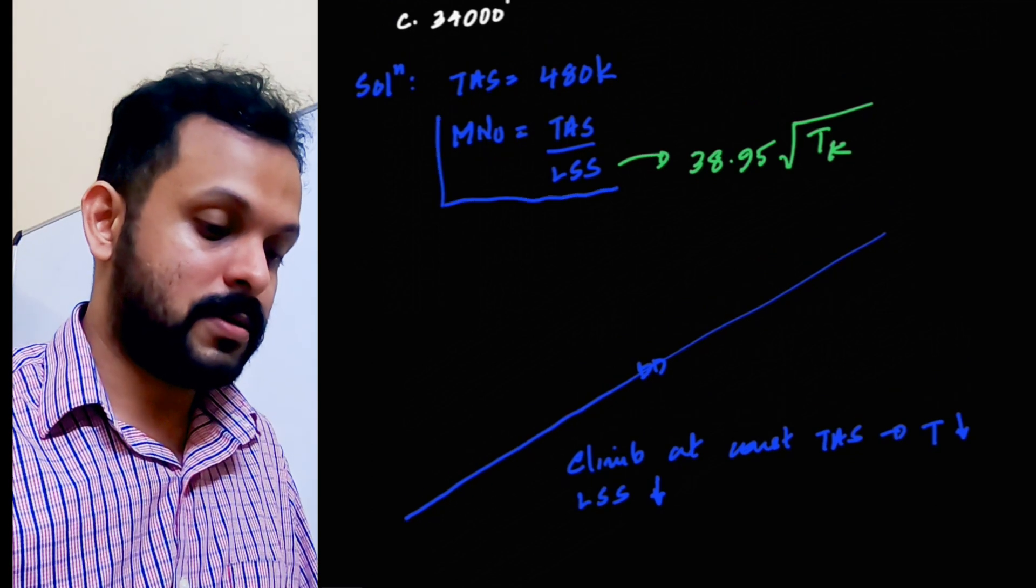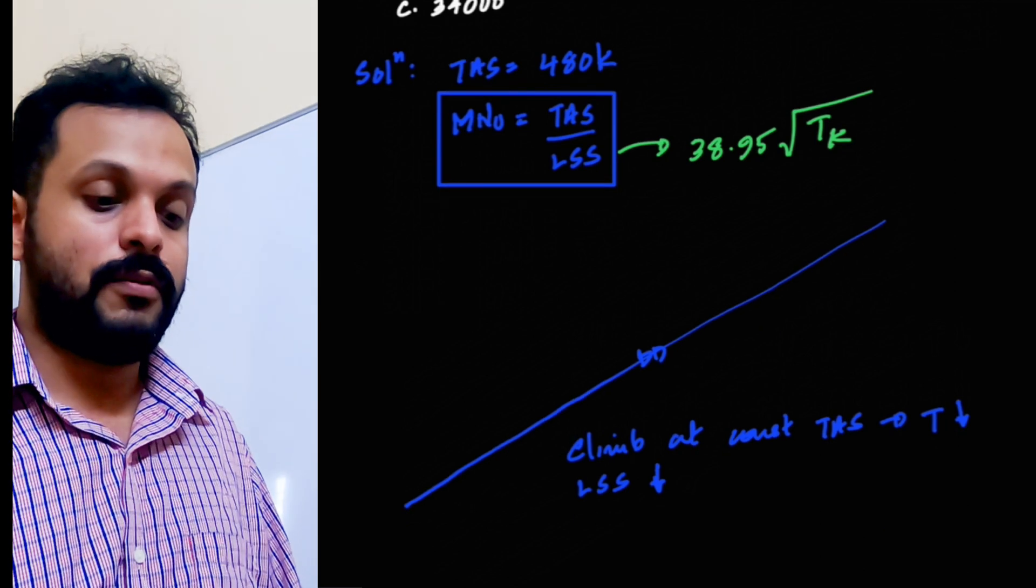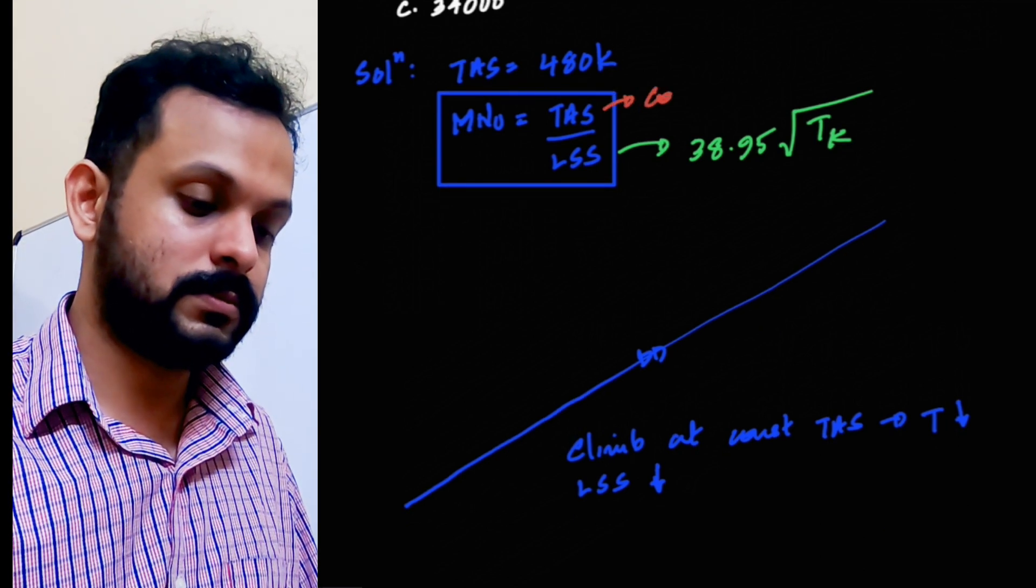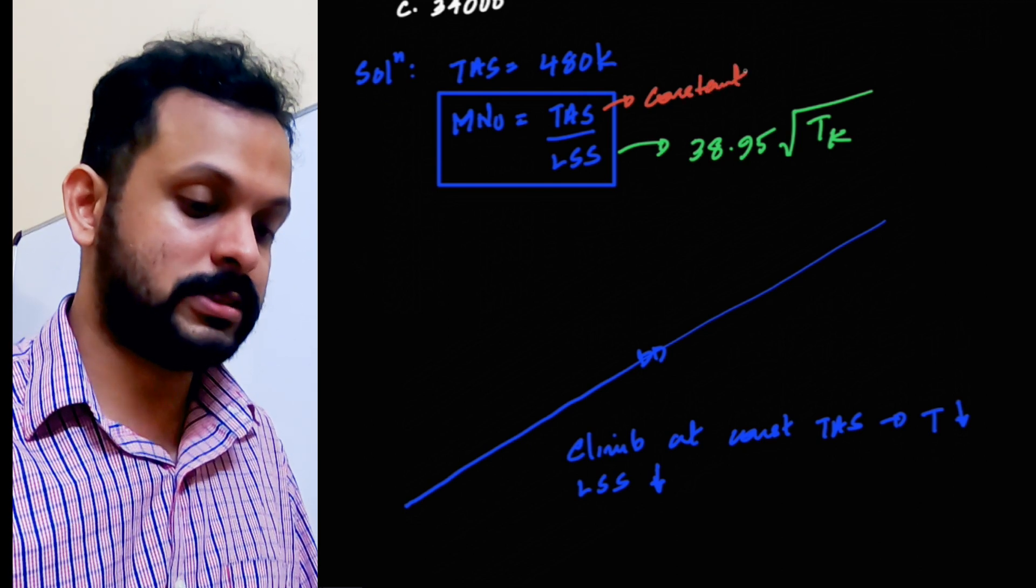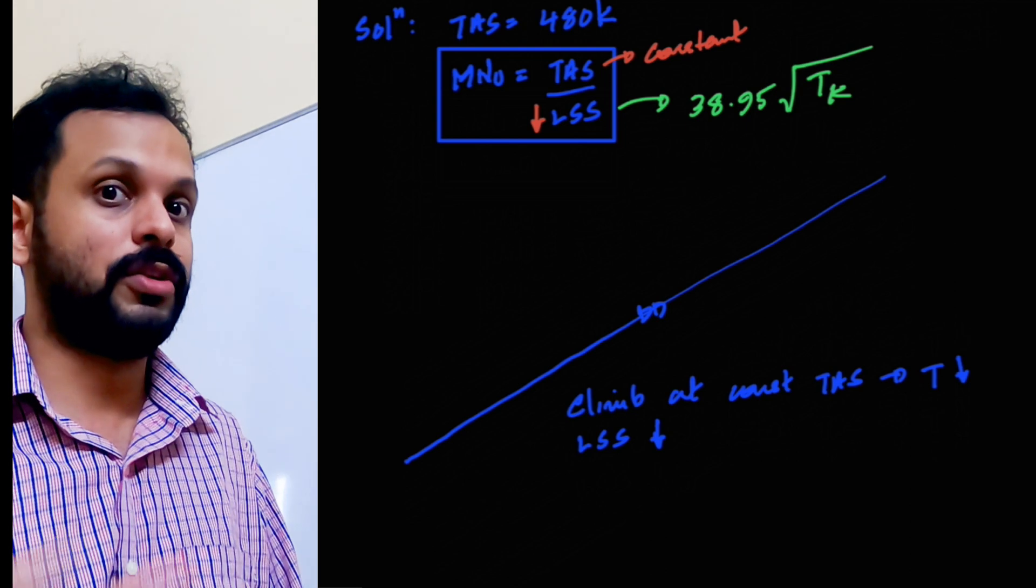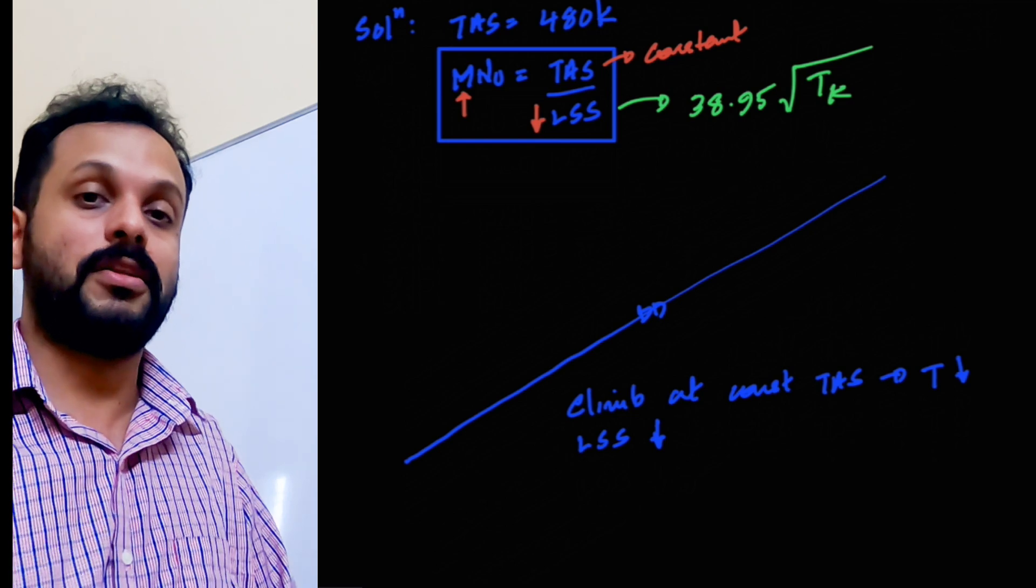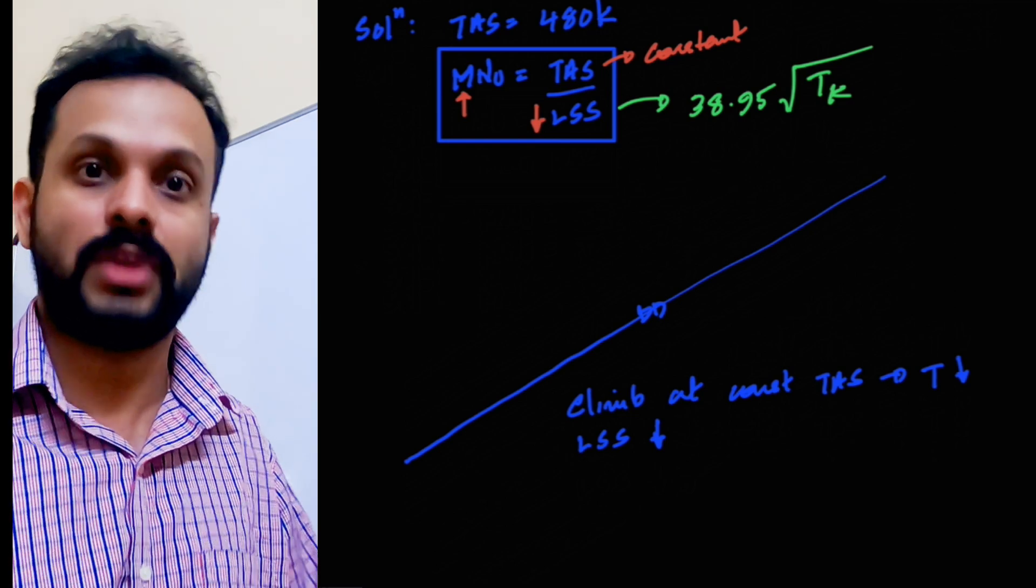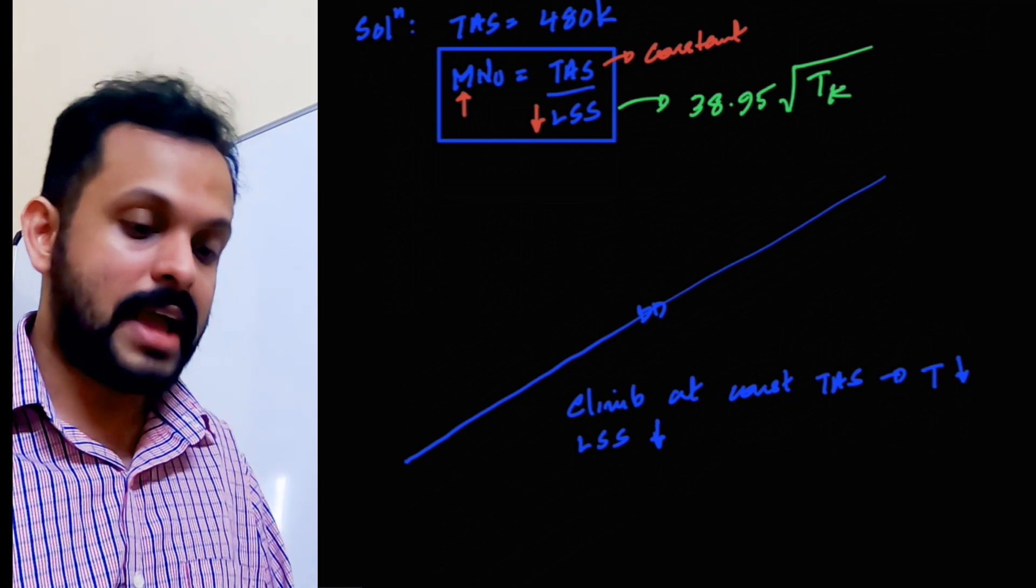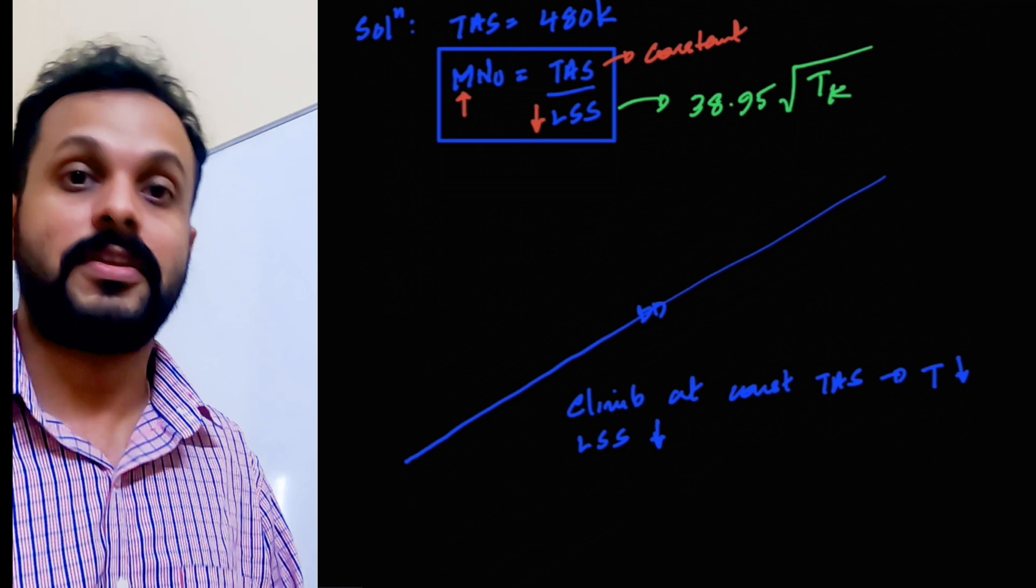So if you take Mach number, which is a ratio between these two, TAS as well as local speed of sound, for a constant TAS, as your local speed of sound reduces because your altitude is increasing, the Mach number is going to increase because denominator is becoming lower and lower and therefore the entire fraction builds up. So Mach number basically increases. And therefore, at different altitudes, you would have different Mach number.